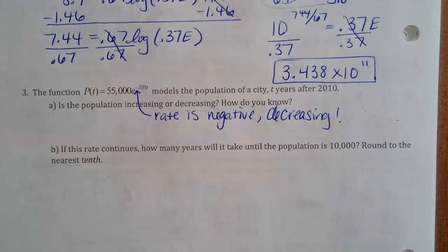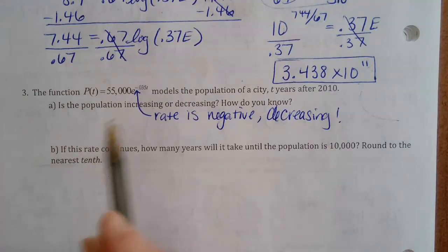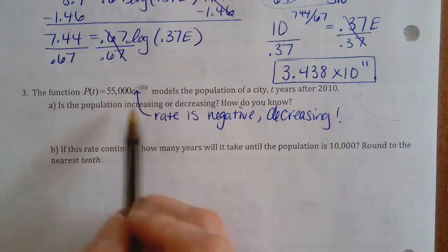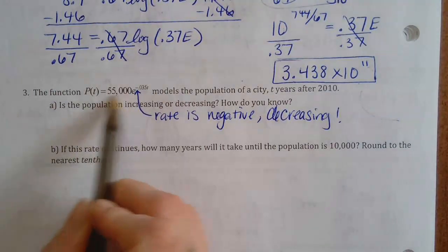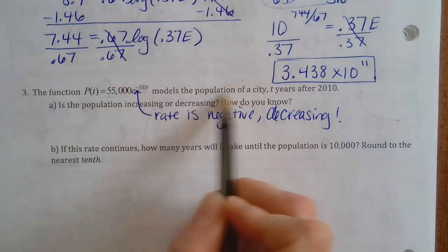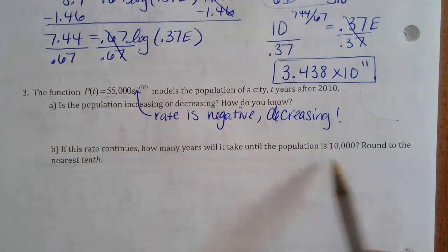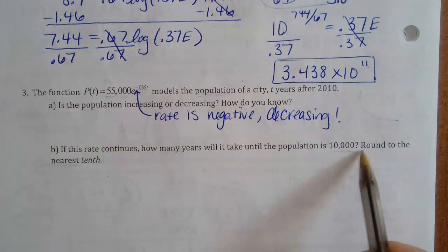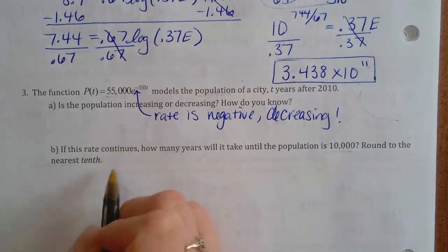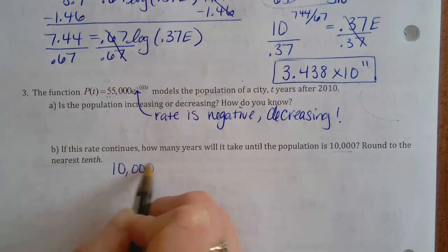Part B: if this rate continues, how many years will it take for the population to get down to 10,000? Round to the nearest tenth. Right now the population is at 55,000 — we don't know how long it takes to get to 10,000, so we set the equation equal to 10,000.